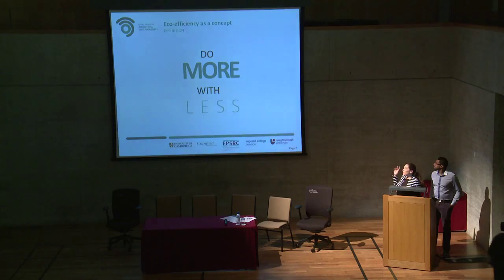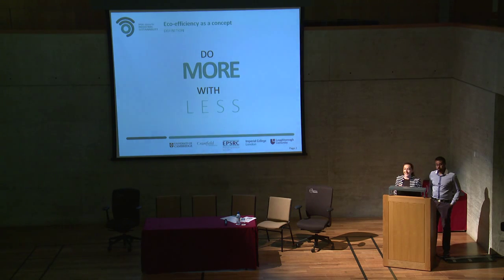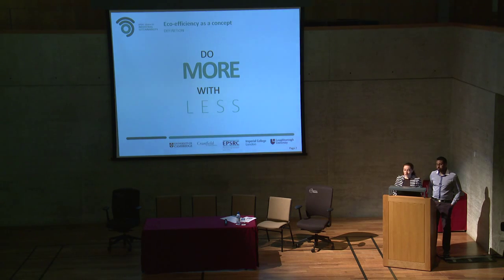It's about creating more value, using less resources, generating less waste and less pollutants. So if we all agree on this definition, I think we can start with the agreement that we need to be more efficient. The way we organize the toolkit is around five elements, and those five elements are basically bringing some bits and pieces of solutions to help companies engage with eco-efficiency.